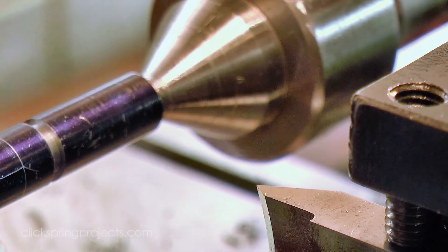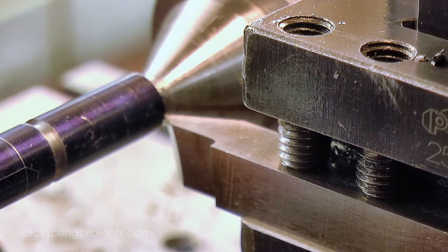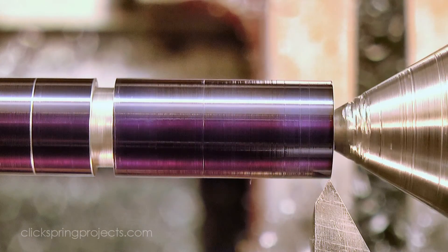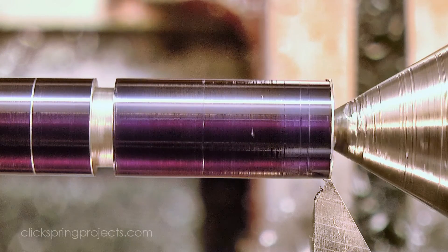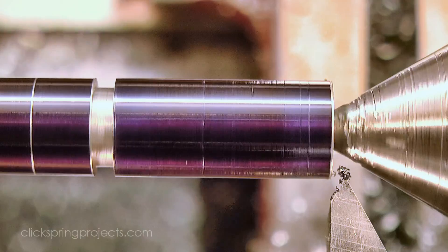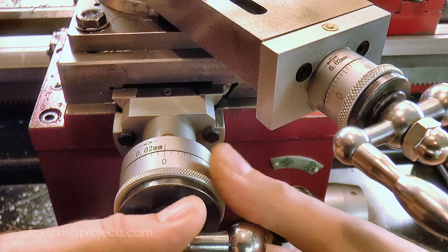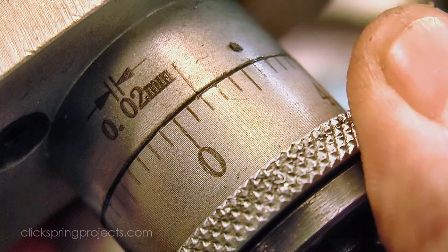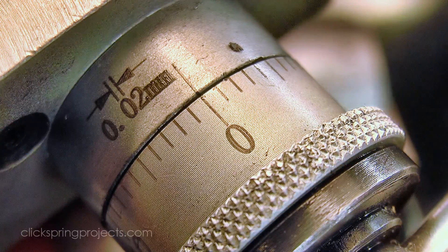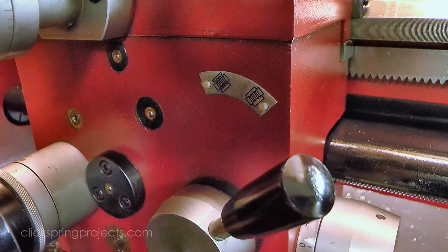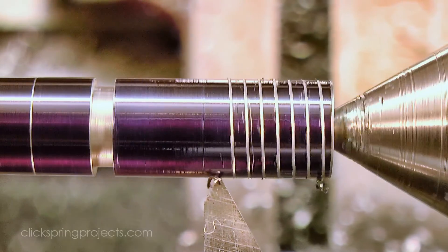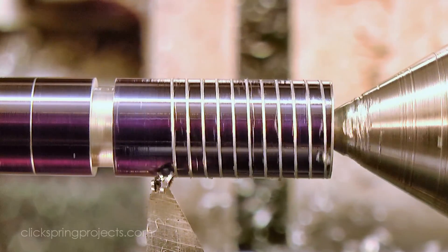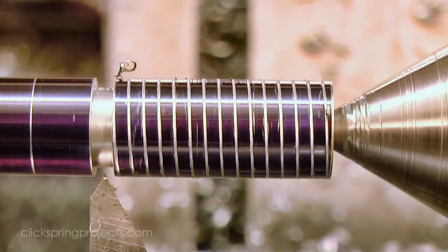Now single point threading is a process of repetition, and I don't mind admitting it takes all of my concentration to stay focused on getting that process correct. It begins with the cutter just touching the work, at which point the handwheel collars are set to zero. The split nut is then engaged with the lead screw to set the carriage in motion. Now this first pass barely marks the work, but it's a great opportunity to confirm that all is as it should be with the thread pitch.